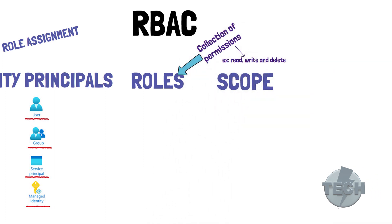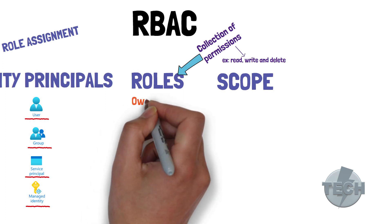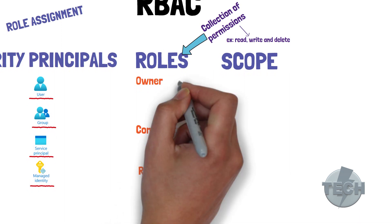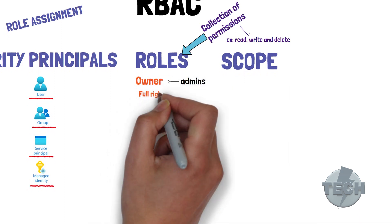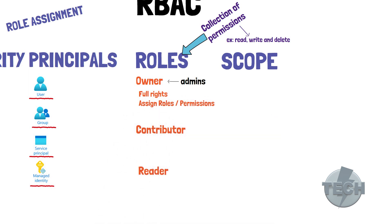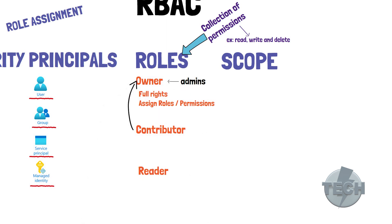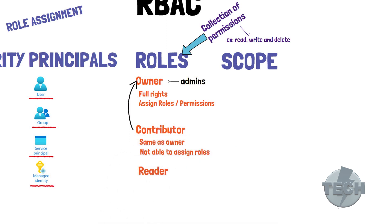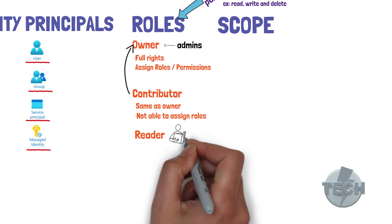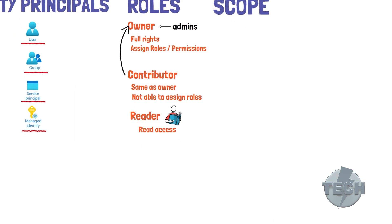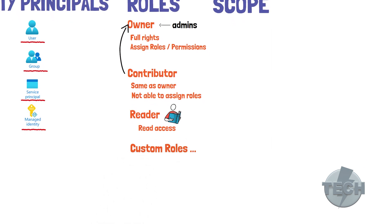Azure has several built-in roles, and the most common ones are owner, contributor, and reader. Owners are the admins — they have full rights to manage resources and the ability to assign roles and permissions on resources themselves. Contributors have basically the same rights as owners, except they are not able to assign roles on resources. Readers, as the name states, are just able to read the resources.